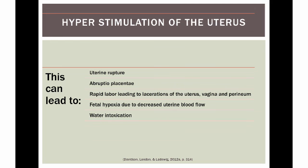Hyperstimulation of the uterus can cause impairment to placental blood flow and result in uterine rupture, placental abruption, rapid labor leading to lacerations of the uterus, vagina, and perineum, and fetal hypoxia. It can also lead to water intoxication, which presents as nausea, vomiting, hypotension, tachycardia, and cardiac arrhythmia when oxytocin is administered too quickly.